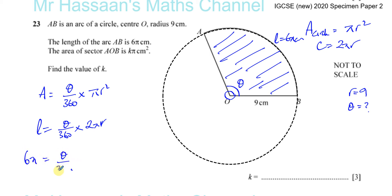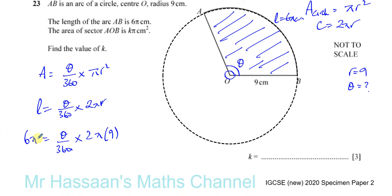The length of the arc is 6π, so 6π equals θ/360 times 2π times 9. If I rearrange this equation, θ equals 360 times 6π over 2 times 9π. I'll keep everything in terms of π since the answer is in terms of π.